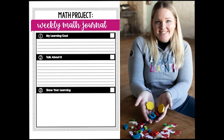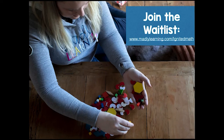Students are essentially building a portfolio of math learning, and you have all of those materials every single week to see what students are able to do. The little boxes on the math journal use a stoplight system, allowing students to self-assess — are they still struggling, progressing well, or really confident? It's our hope that this gives you your time back so you can spend it assessing students rather than planning and prepping. If you're as excited about Ignited Math as we are, sign up for the waitlist below to be the first to have access when it launches very soon.